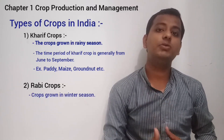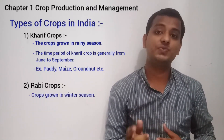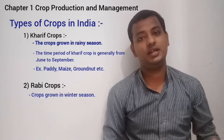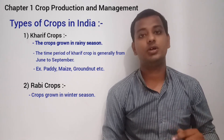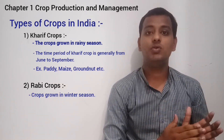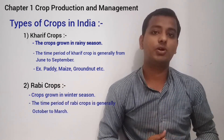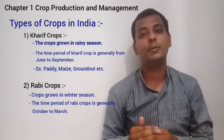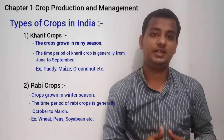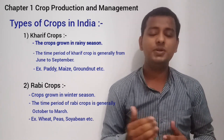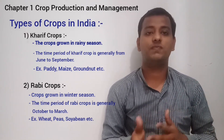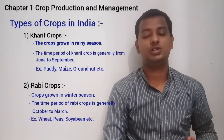The second type are Rabi crops, which are grown in the winter season. The time period is generally from October to March. Examples of Rabi crops are gram, peas, etc. Besides these two, many farmers also grow some pulses and vegetables in the summer season.